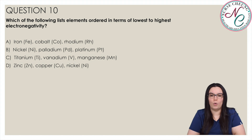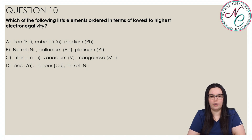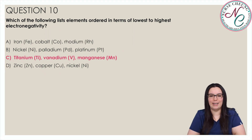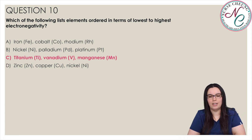Which of the following lists elements in order of lowest to highest electronegativity? Is it A: Iron, Cobalt, Rhodium? B: Nickel, Palladium, Platinum? C: Titanium, Vanadium, Manganese? Or D: Zinc, Copper, Nickel? And the correct answer is C: Titanium, Vanadium, Manganese. Electronegativity increases as you move from left to right across the table or row, and it decreases as you move down a group or column of the table. Titanium, Vanadium, and Manganese are listed in order of their positions from left to right on the fourth row of the table, so they are listed in order of least to greatest electronegativity.